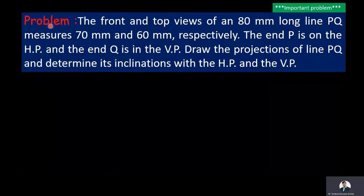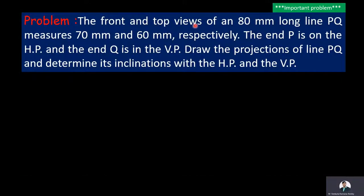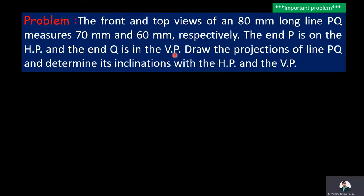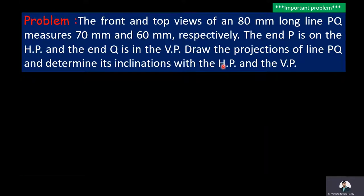The given problem is: the front view and top view of an 80mm long line PQ measures 70mm and 60mm respectively. The end P is on the HP and the end Q is in the VP. Draw the projections of the line PQ and determine its inclinations with the HP and the VP.